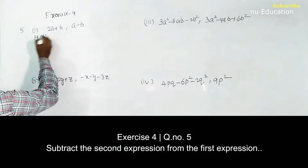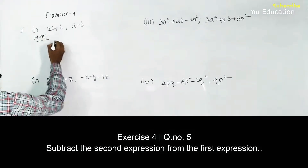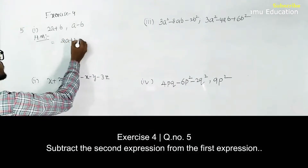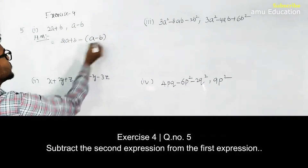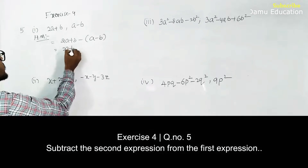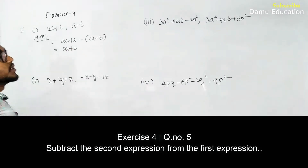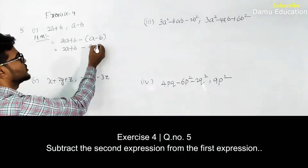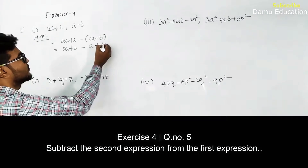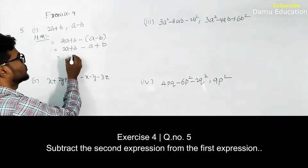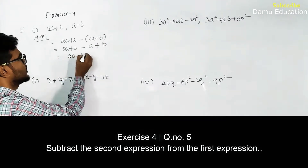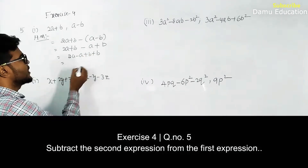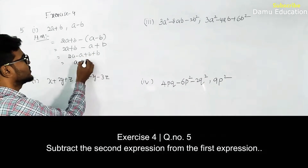First question: 2a plus b minus of (a minus b). So we have 2a plus b, then minus into minus will become plus b. So 2a minus a plus b plus b: 2a minus a will become a, plus b plus b is 2b. So we got a plus 2b.